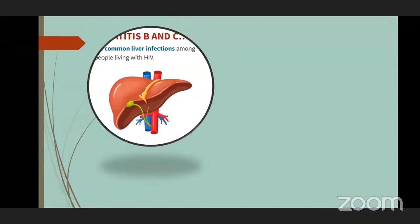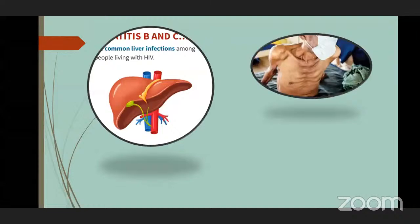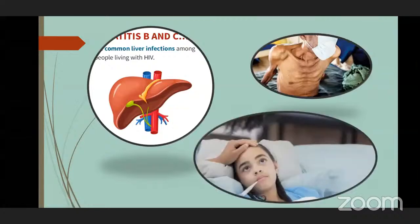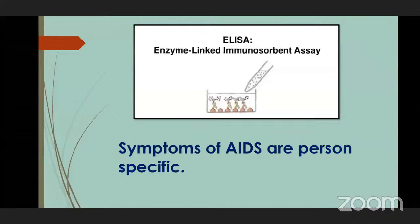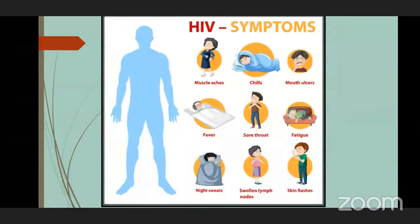A person with HIV may suffer from various diseases like common liver infections, tuberculosis, and prolonged fever. To diagnose AIDS, the ELISA test is done in a proper laboratory. The symptoms of AIDS are person-specific — different patients may get different symptoms. Some common symptoms include muscle aches, chills, mouth ulcers, fever, sore throat, fatigue, night sweats, swollen lymph nodes, and skin rashes.